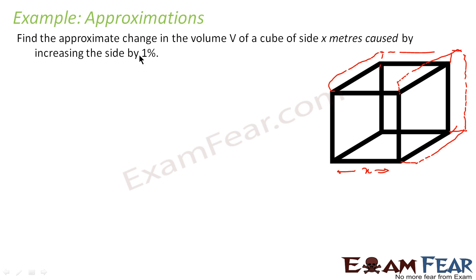So in this case, my delta x is 1% of x, that is 1 by 100 into x. So my delta x is x by 100. I have to find change in volume, that is I have to find delta V. I know V is equal to x cubed, volume of cube. I have to find delta V. If I just differentiate with respect to x, dV by dx is nothing but 3x squared, or I can say that dV is nothing but 3x squared dx.